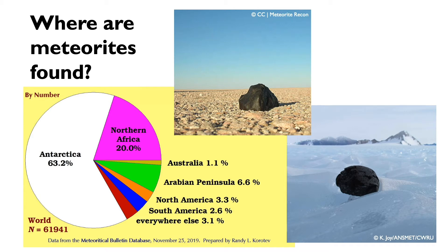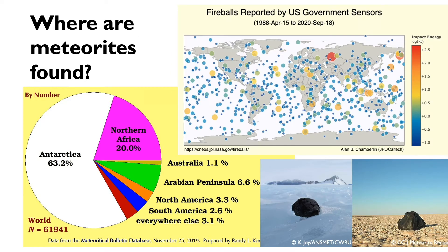Meteorites are most commonly found in deserts, specifically Antarctica and the Sahara Desert, followed by the Arabian Peninsula, Australia, and the deserts of North America. As you can see from this map, it isn't just because more meteorites fall in these deserts — rather, it's just easier to recover them from deserts than from forests and oceans.